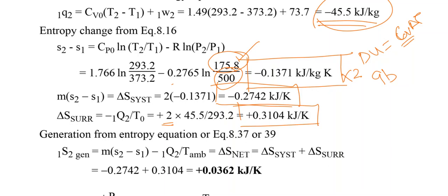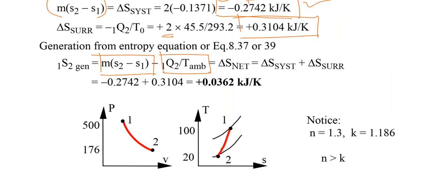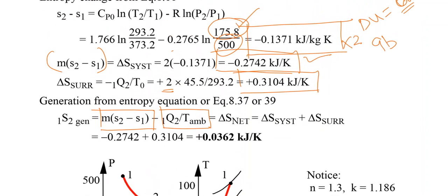The total entropy generation is the total entropy change minus the entropy change of the surroundings. The net entropy generation comes out to +0.0362 kJ/K. Since this value is greater than zero, the process is a possible (feasible) process, consistent with the second law of thermodynamics.